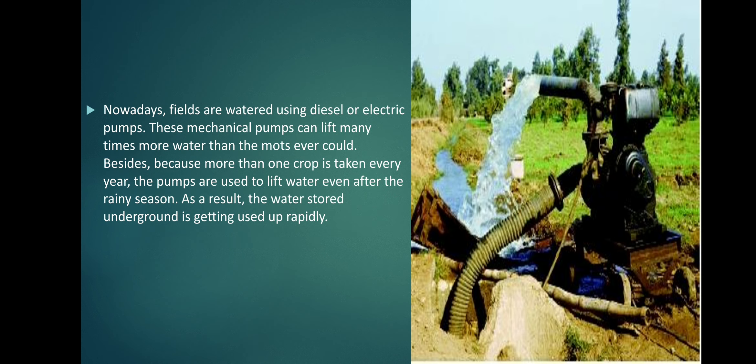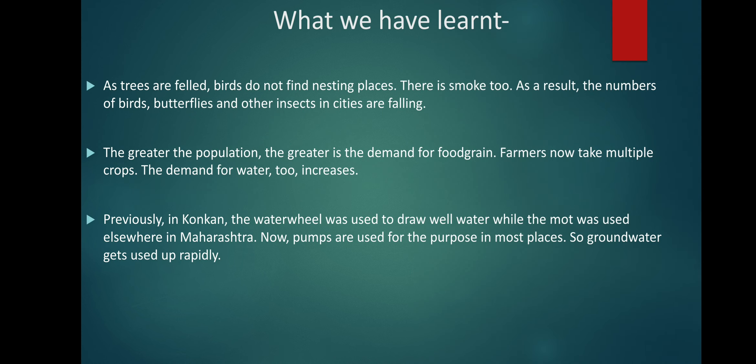Nowadays, fields are watered using diesel or electric pumps. These mechanical pumps can lift many times more water than the moth ever could. Besides, because more than one crop is taken every year, the pumps are used to lift water even after the rainy season. As a result, the water stored underground is getting used up rapidly.